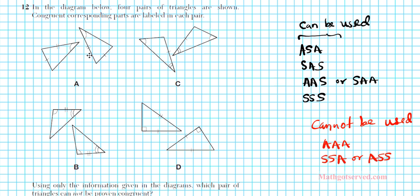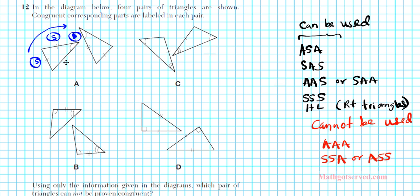Let's look at these triangles and see which one violates these ideas. For option A, we have two congruent sides — that's S, S — and then an angle. So whichever way you view it, this is SSA or ASS going the other direction. We said SSA cannot be used, so this is the answer. This cannot be proven congruent with that information.